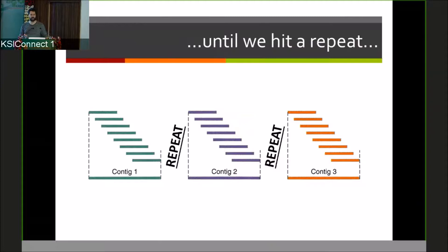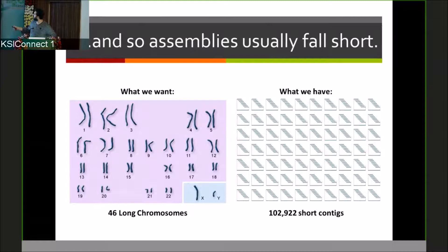What you end up with using these strategies generically is a set of contigs. To give you a sense, if you take one of the best extant short read assemblers that exists today, for the human genome, what you want is the 46 long chromosomes or the 23 chromosomes of the human genome. The software will produce about 100,000 short contigs. You've got 100,000 puzzle pieces instead of the fully assembled puzzle.